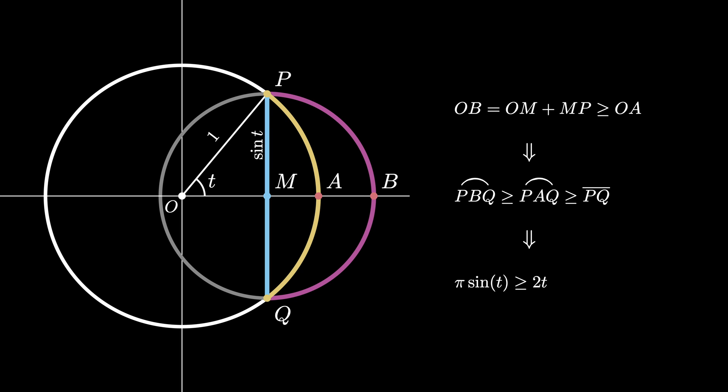And finally, the length of the chord PQ is equal to 2 times the length of the line PM, which is sine of T, and therefore the chord length PQ is 2 times the sine of T.